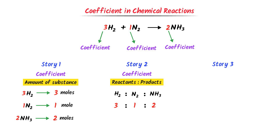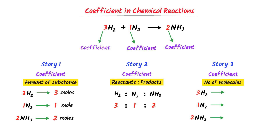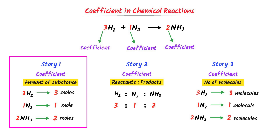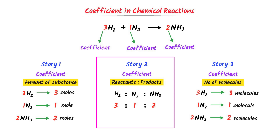Thirdly, coefficients represent the number of molecules. So 3 H₂, 1 N₂, 2 NH₃ means: the coefficient 3 represents 3 molecules of hydrogen gas, the coefficient 1 represents 1 molecule of nitrogen gas, and the coefficient 2 represents 2 molecules of NH₃. Story 1: coefficient = number of moles. Story 2: coefficient = ratio of reactants to products. Story 3: coefficient = number of molecules.